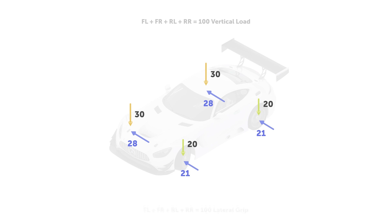The sum of the lateral grip units is 98, so overall we've lost 2 total units of grip. What we gained on the outside tyres by adding vertical load is less than what we lost from the inside tyres. The takeaway here is that — while we've exaggerated the magnitudes involved — load transfer is always bad. We always want to minimise the total load transfer the car experiences because we'll always end up with a net loss: the outside tyres gain less than the inside tyres lose.